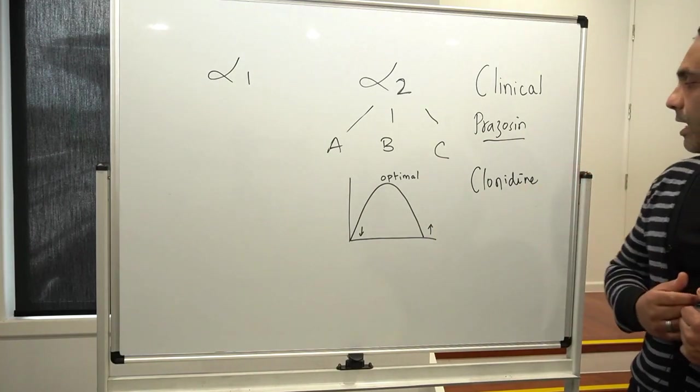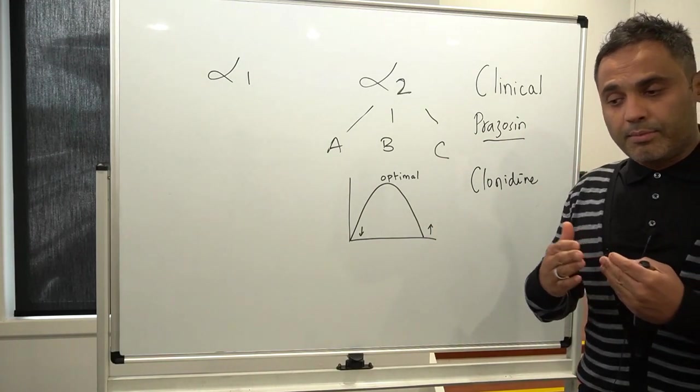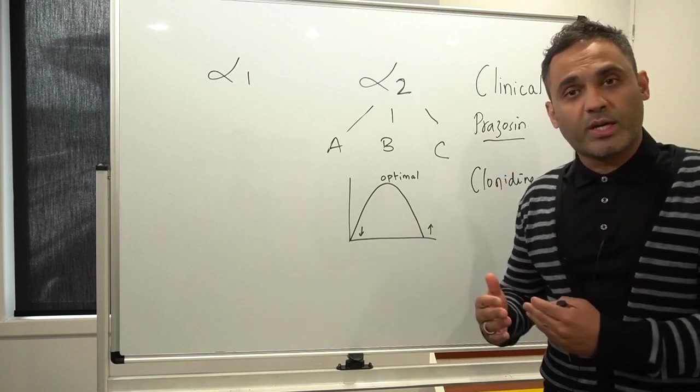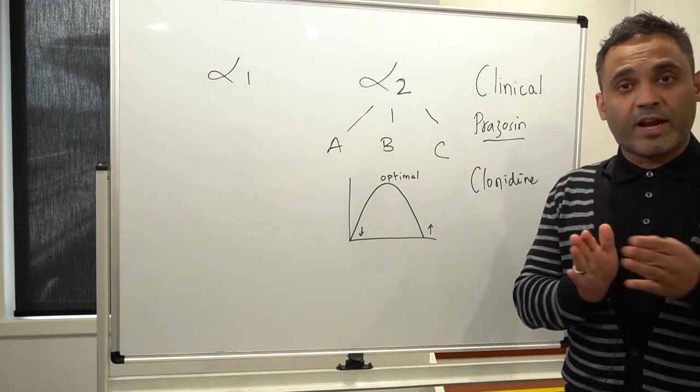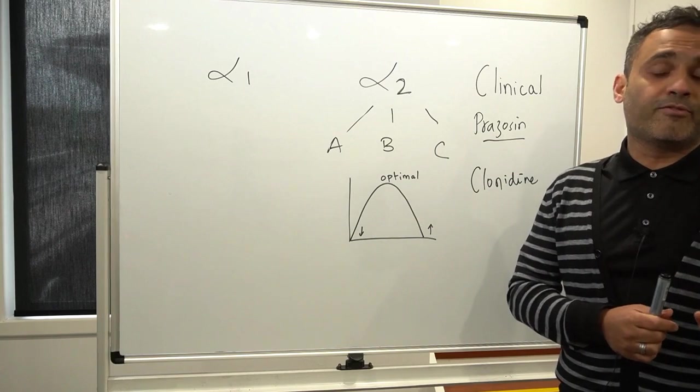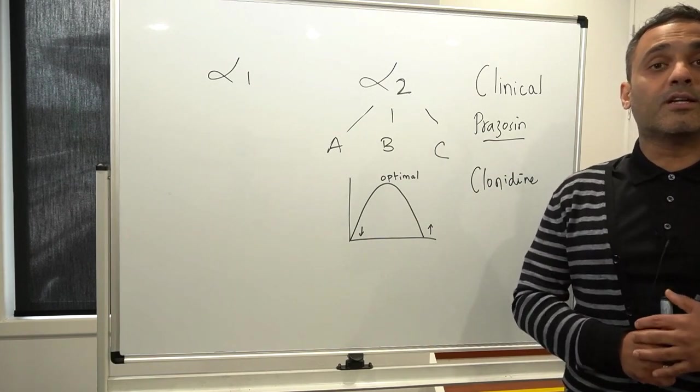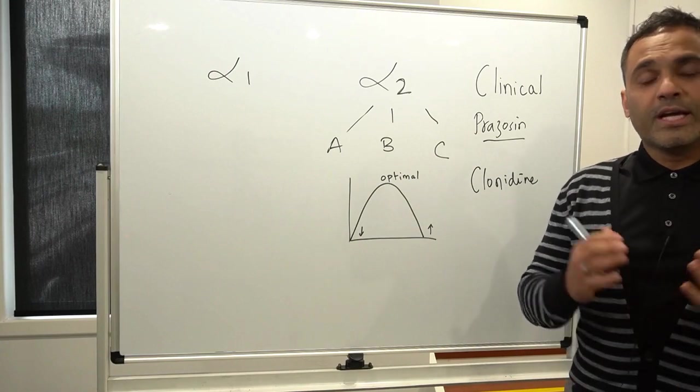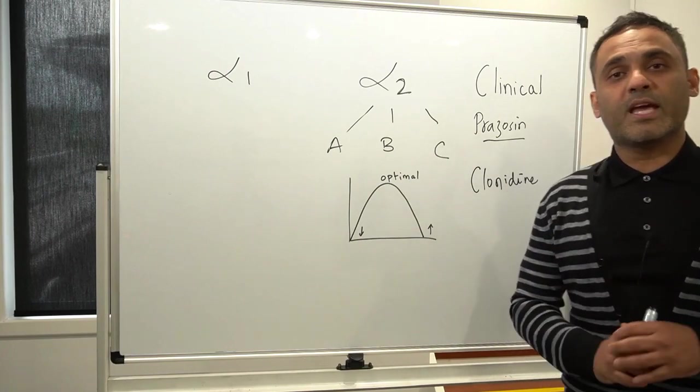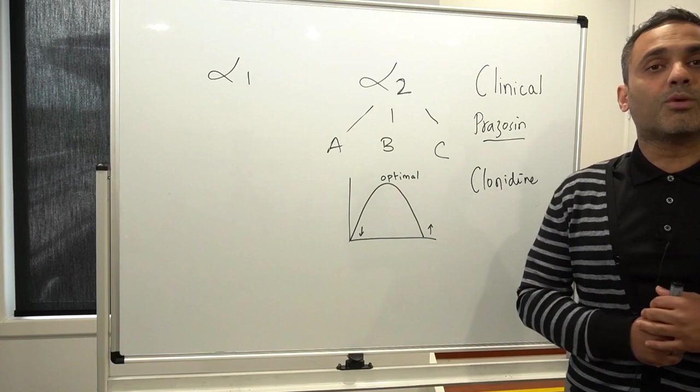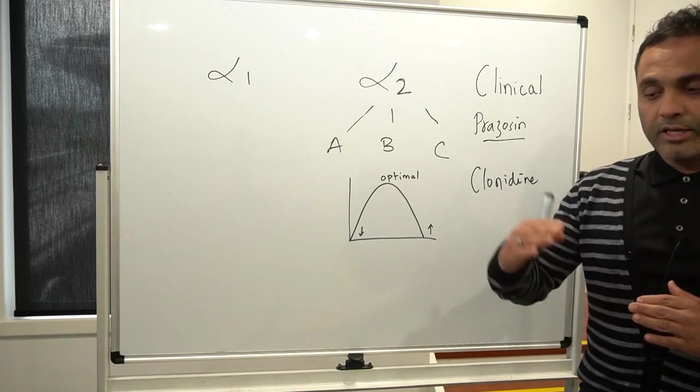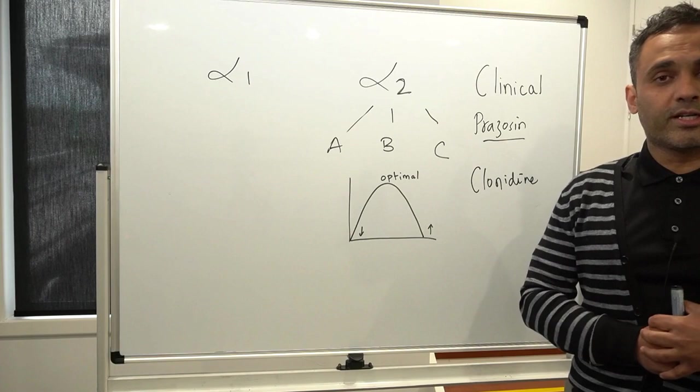When we're thinking about clonidine in some cases you can prescribe it just once a day, but we know that the half-life can range at the lower end about five hours so in some cases one might need to prescribe it twice a day as well. It's an individual decision that one needs to make but it's very important to monitor blood pressure when we're increasing the doses and starting clonidine as well.